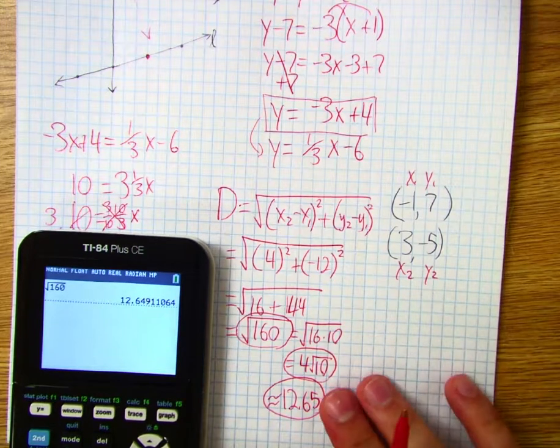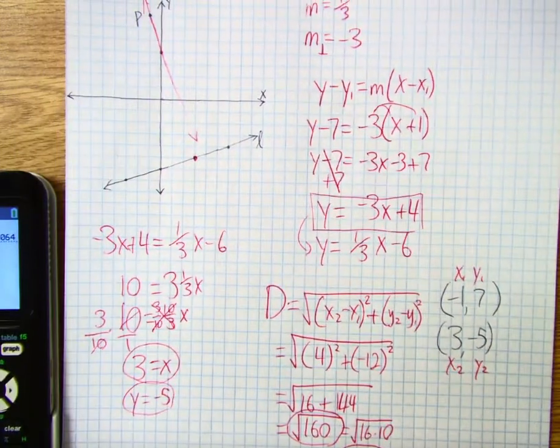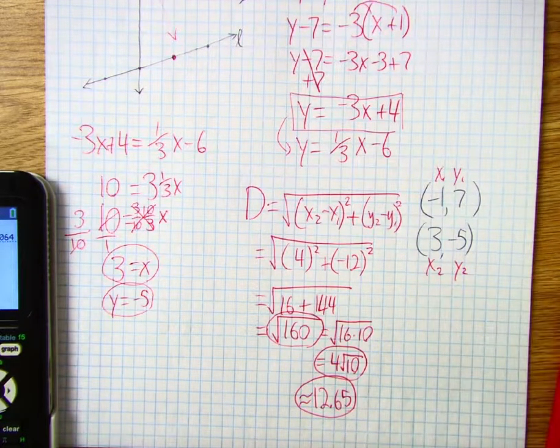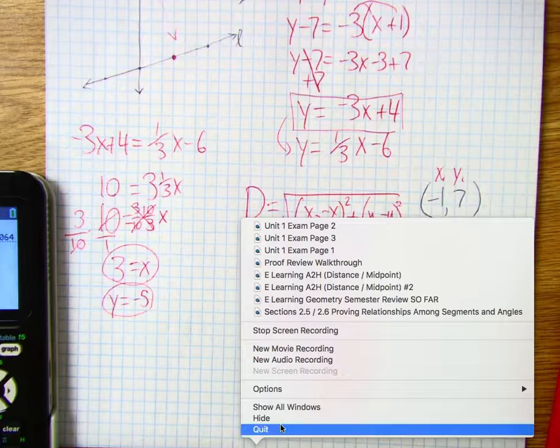But there we have it. We have now found the distance from this point to this line and I would represent it really in any one of these three ways. Good luck on your performance test, guys.